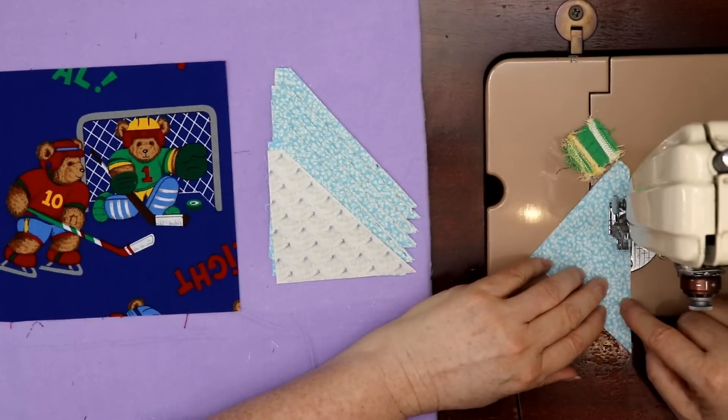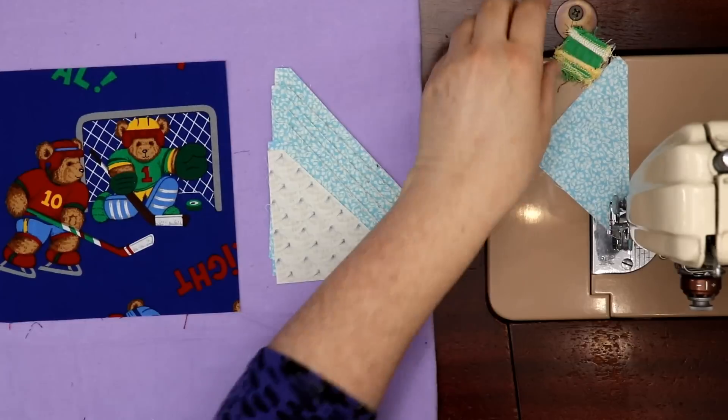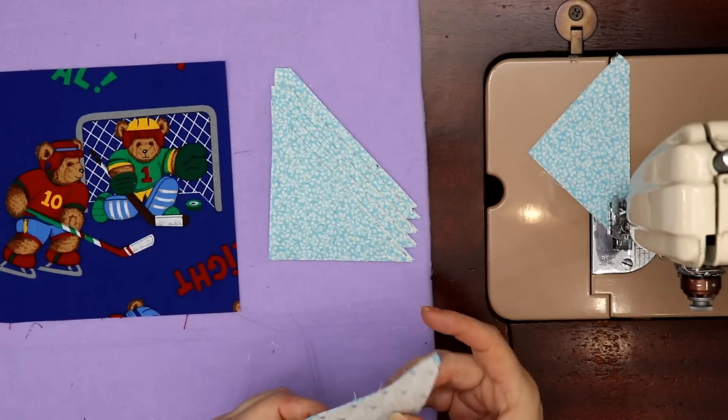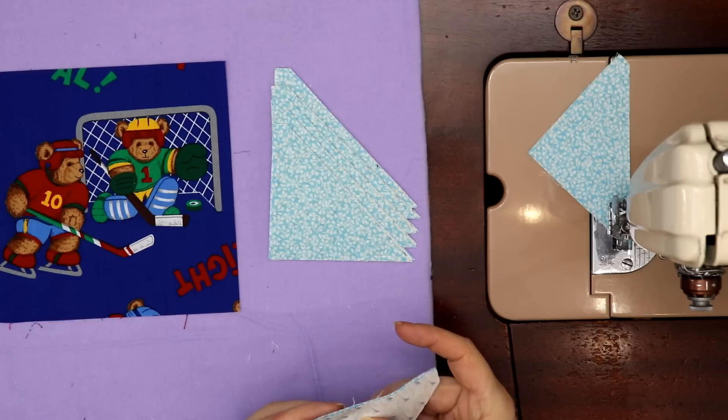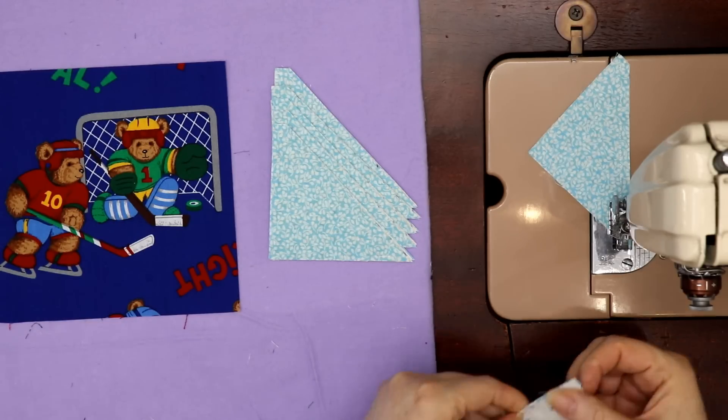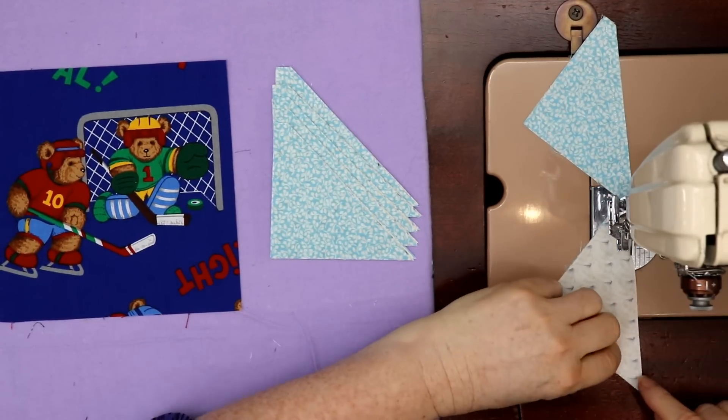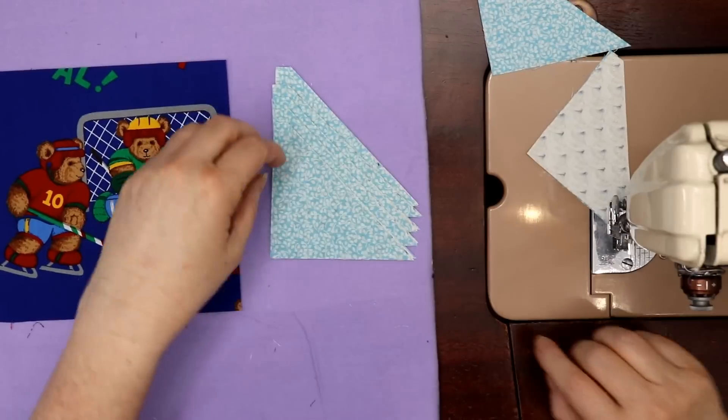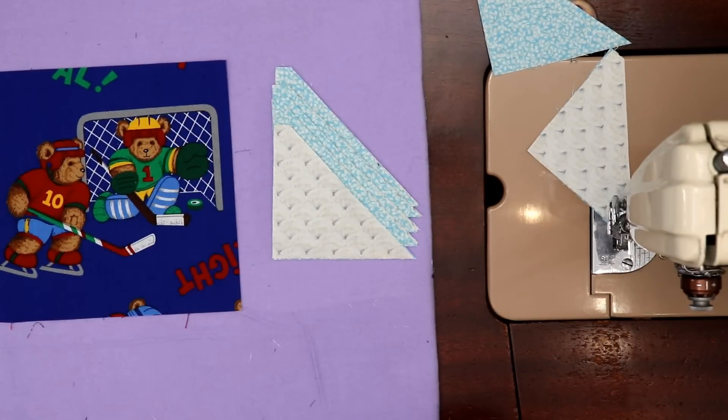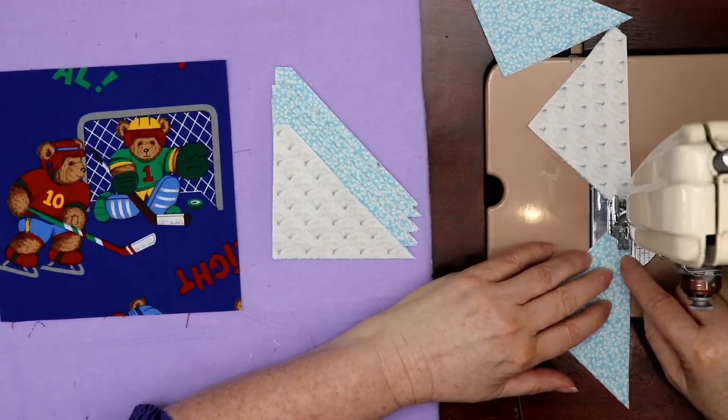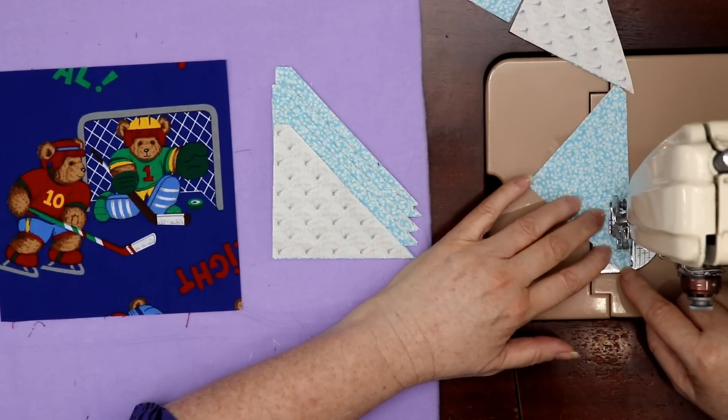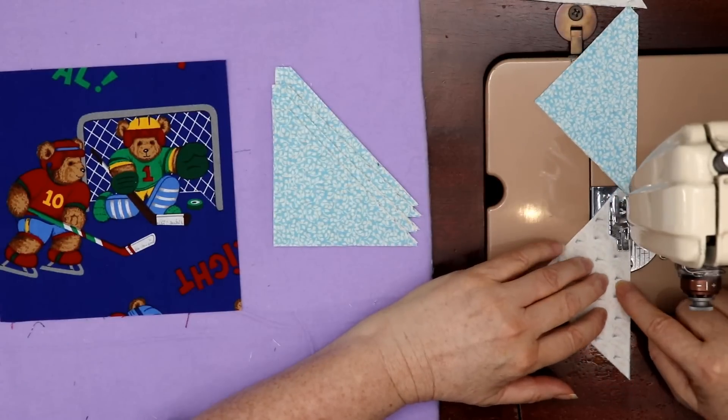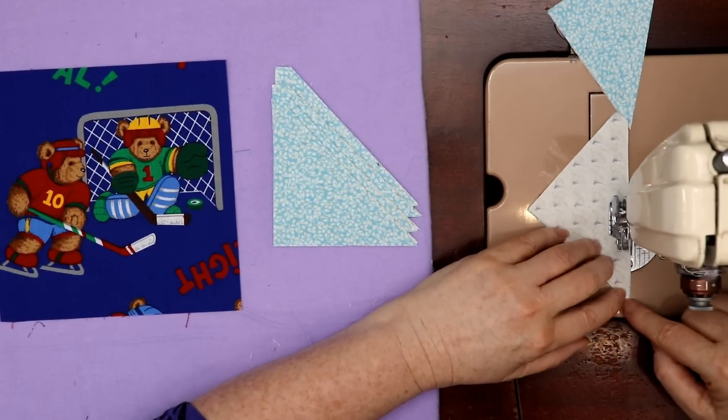One advantage on the easy angle triangle, that one dog ear is already gone, it's out of here. So it's nice easy sewing and you get a lot of triangles done very quickly. You need 12 of these half square triangles to go around.